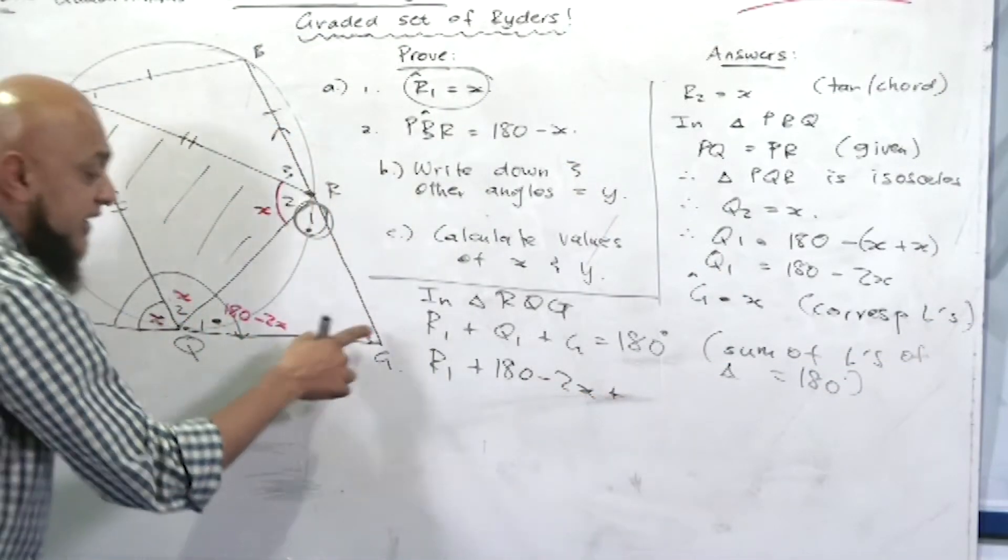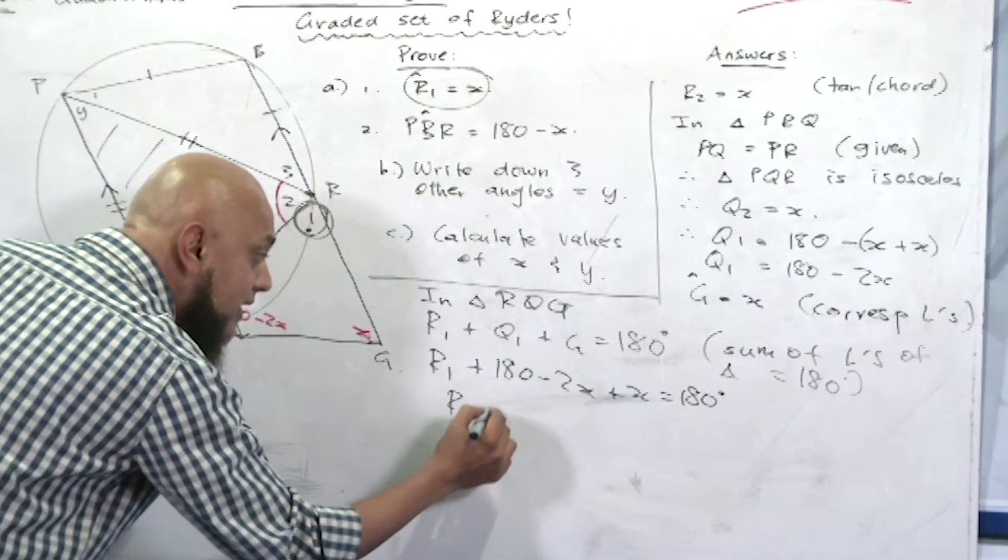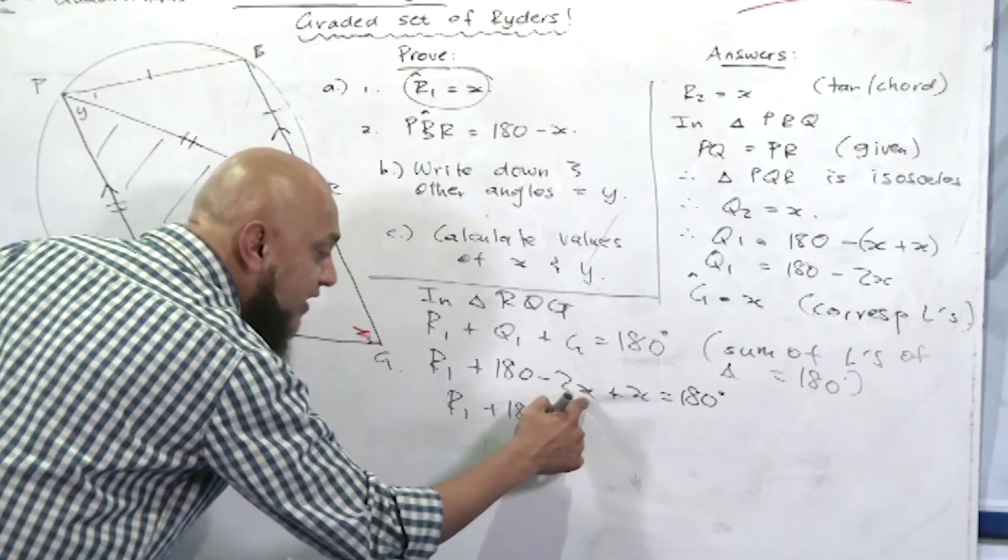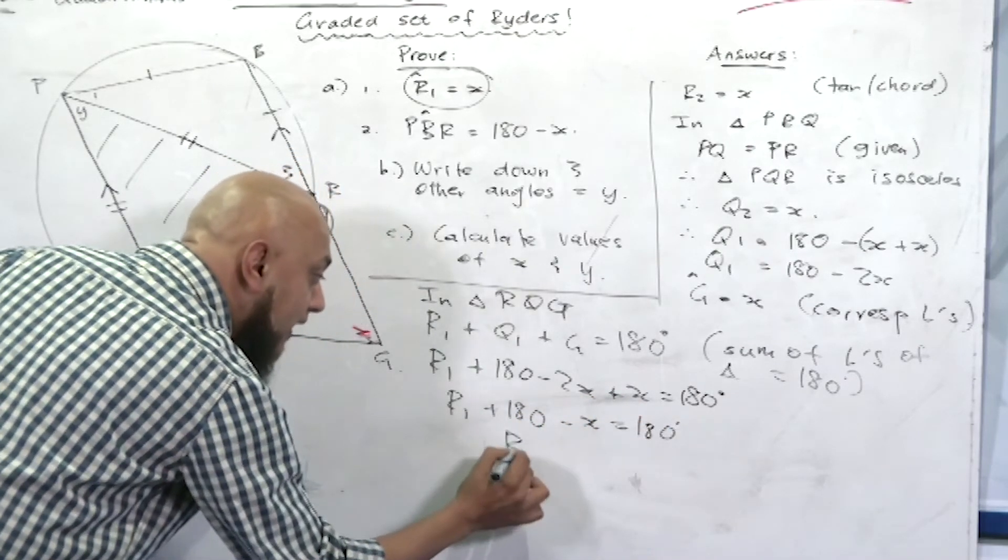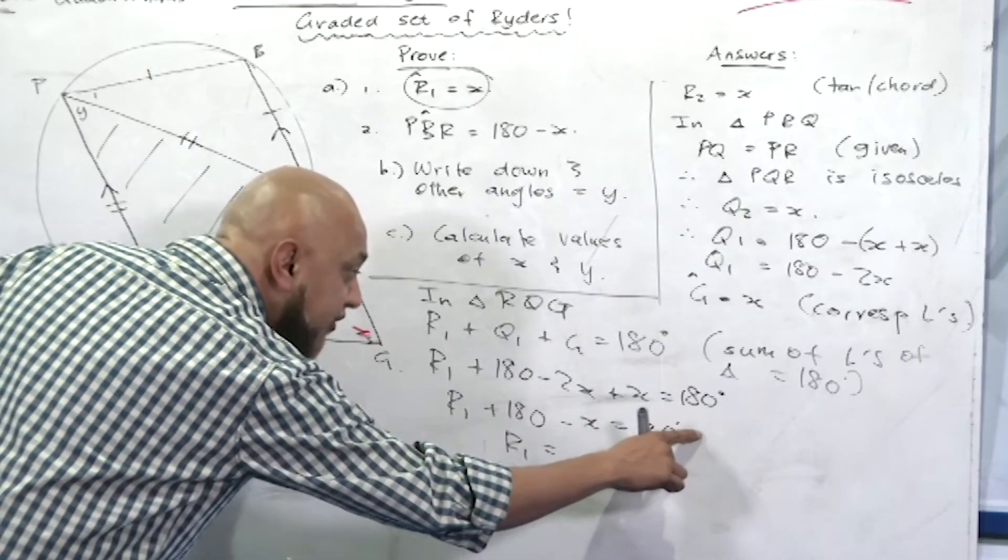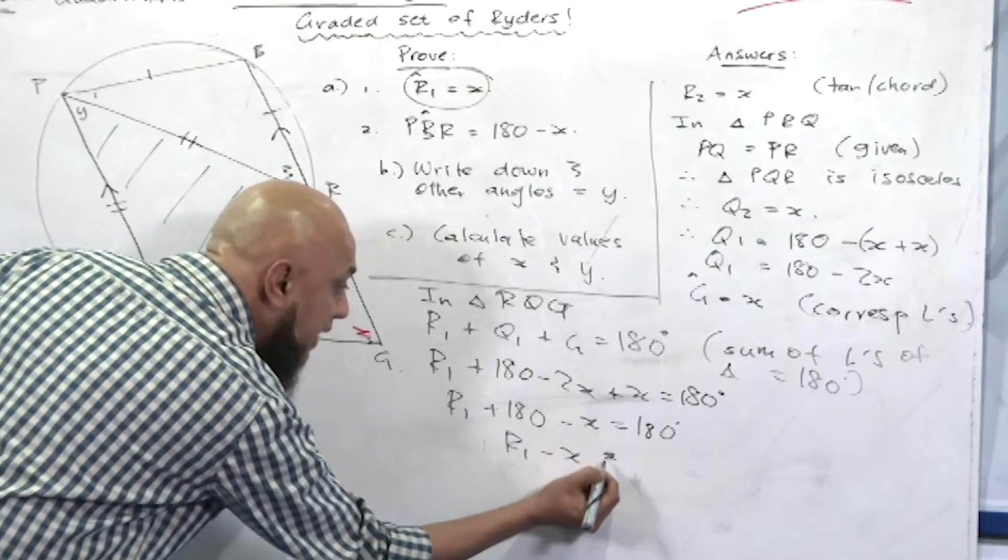Do I have q1? Yes I have, plus 180 minus 2x. Plus do I have g? Yes, plus x is equal to 180. There is an equation: r1 plus 180 minus 2x plus x, minus x is equal to 180.